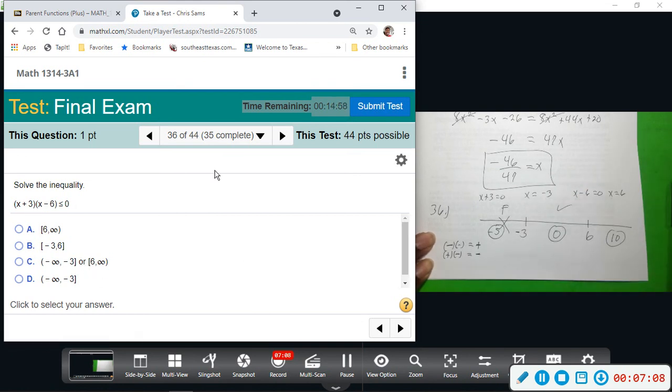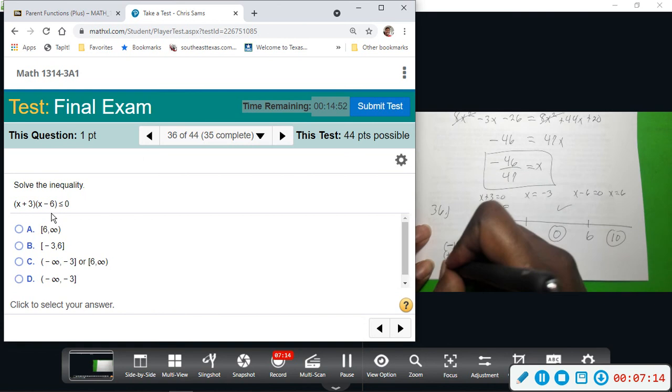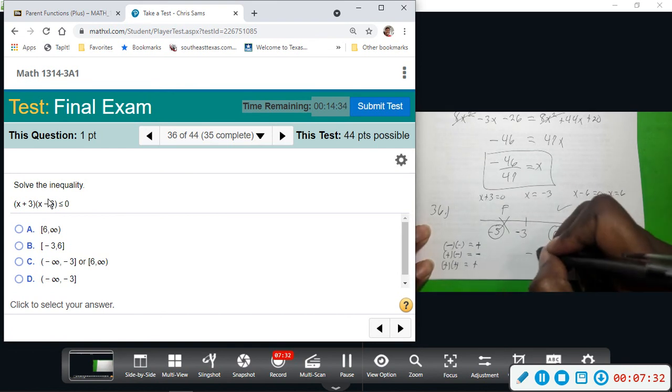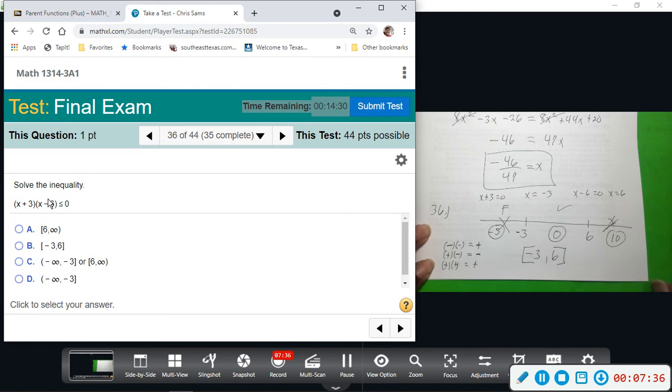And then if we plug in 10, 10 would be positive here and positive here. So if I have positive times positive, that equals positive. That is not less than 0, so I don't want that. So I want the interval from negative 3 to 6. And because we have equality, we're going to include negative 3 and 6. So B.